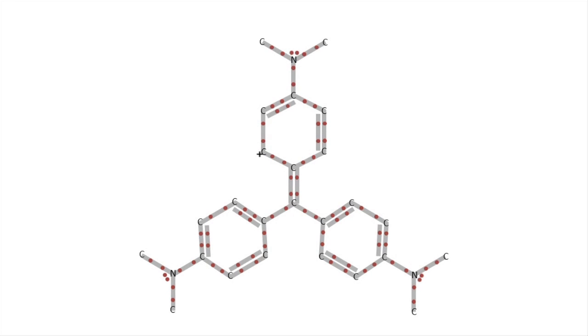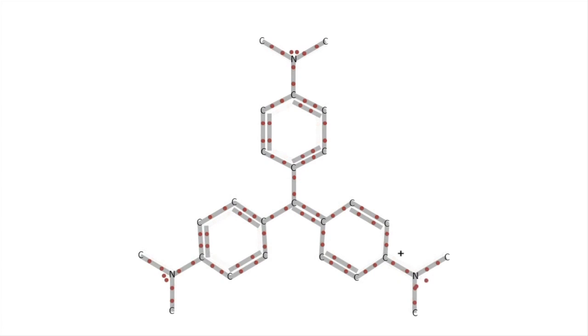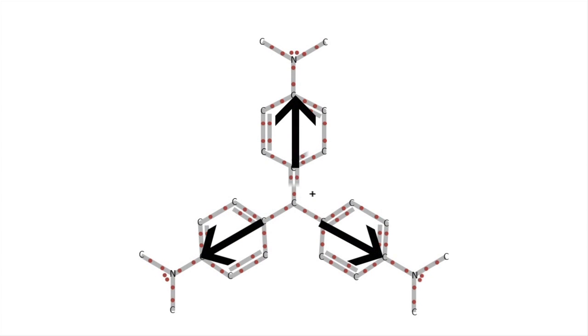So again, the answer lies with its structure. As we discussed before, the electrons are moving throughout the entire molecule very quickly. However, the electrons are not spread out evenly. Since the nitrogen atoms on the outside of the structure have a higher electronegativity, they pull the electrons towards them and away from the center carbon atom.